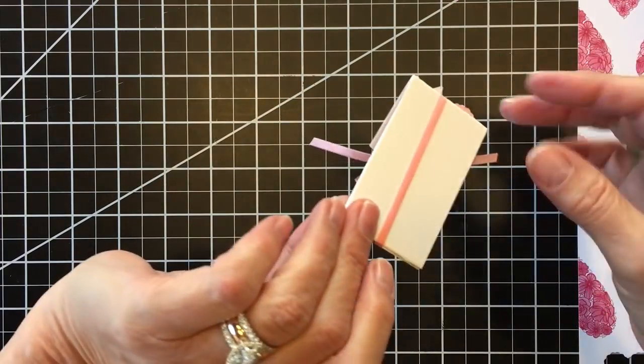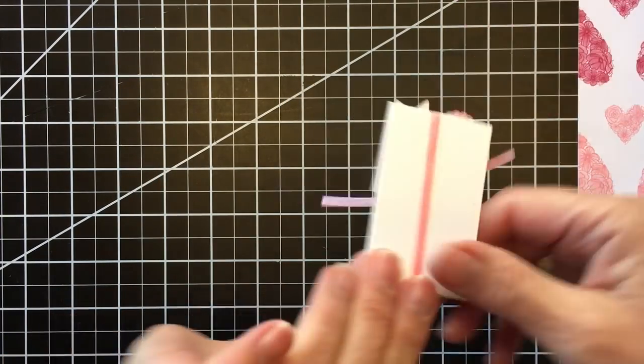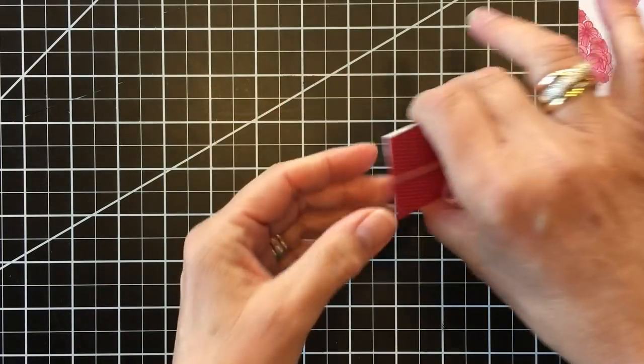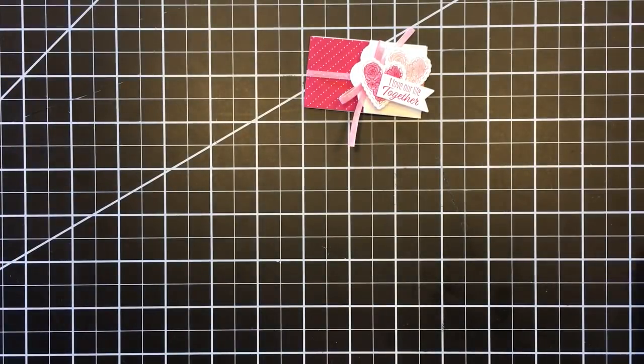I might even put a mini dimensional or double stack that side but you can see how simple that was to make. You can see the back side. I'll just use that a little bit to get it in the center. So that's my finished product and here's the other one that I made.